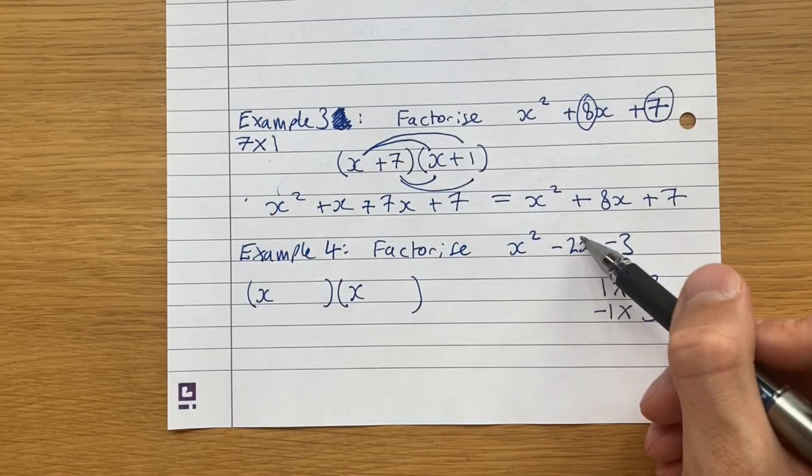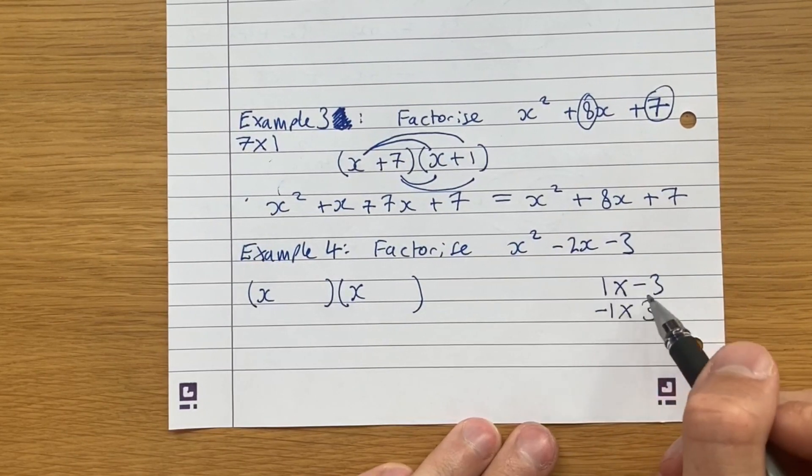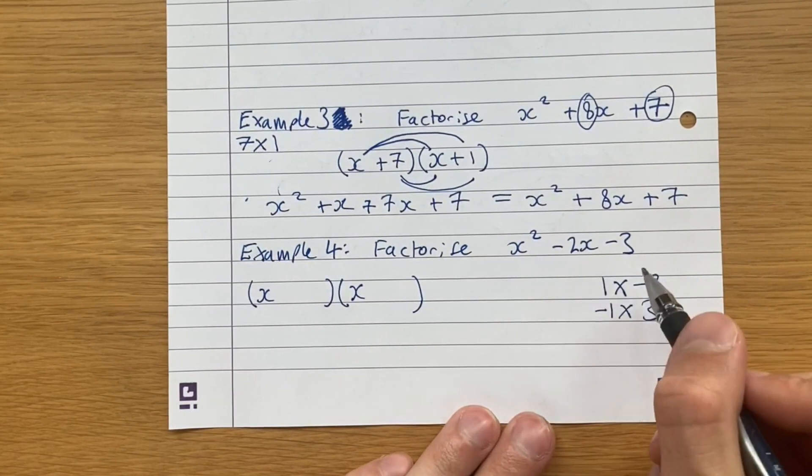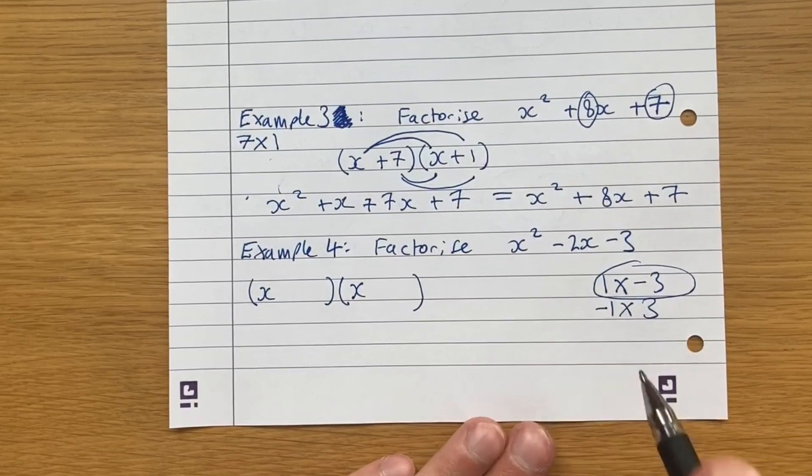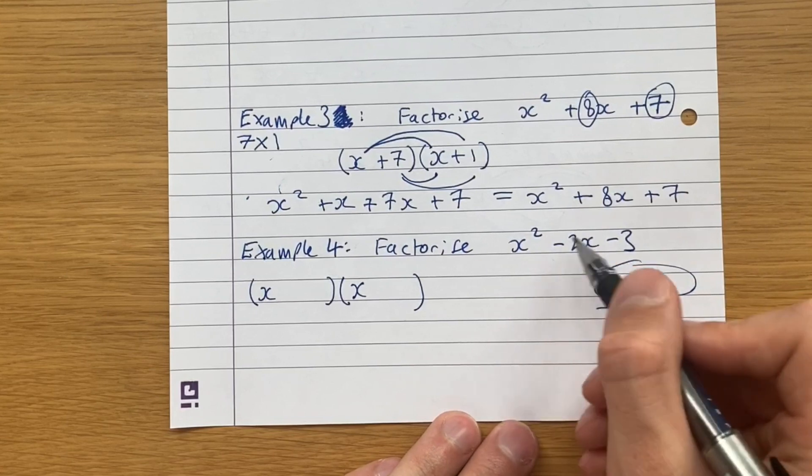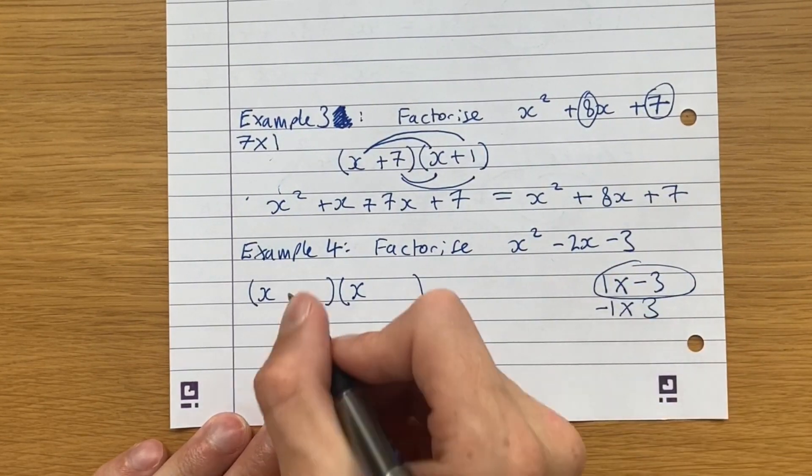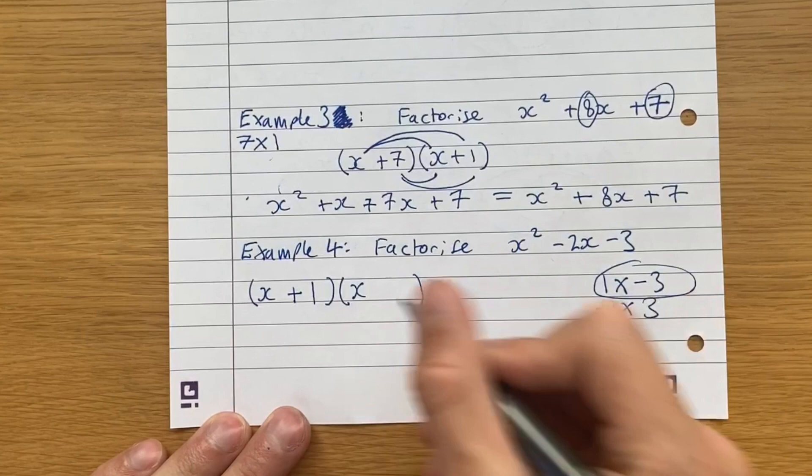So these are our pairs. And now all we need to do is think of which of these two add together to give us this number here. Well, 1 plus minus 3 is minus 2. So it's this one here. 1 and minus 3. Because minus 1 plus 3 is 2, and that is not what we want because we want minus 2. So you just put those in. A 1 and a minus 3.